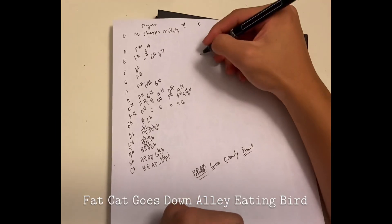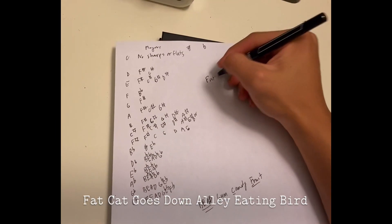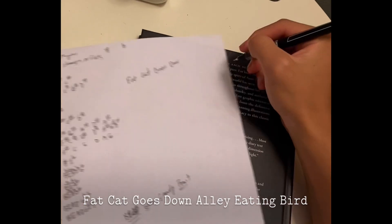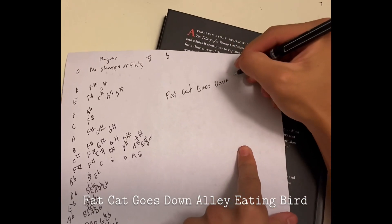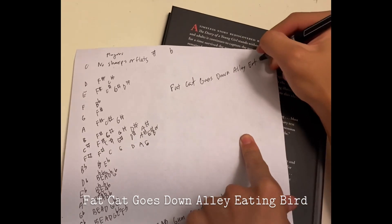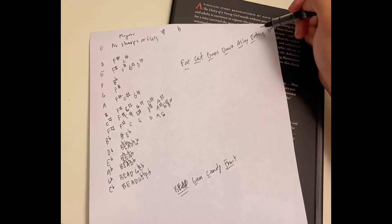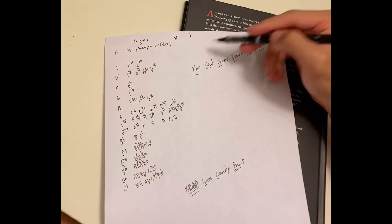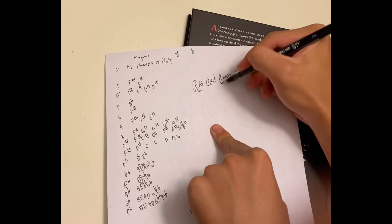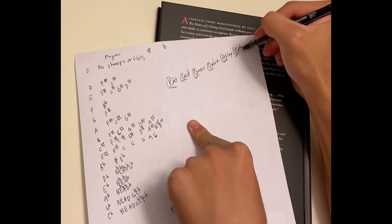For sharps, Fat Cat Go Down Alley Eating Bird. So this can be helpful. For sharps, Fat Cat Goes Down Alley Eating Bird. First letter of every word. So F-C-G-D-A-E-B. So this is going to be it for this lesson.